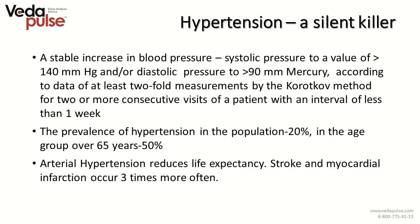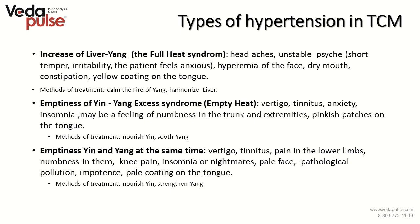Hypertension is a silent killer because it takes first place among causes of sudden death. People with hypertension get used to its symptoms and do not take preventive measures until it is too late. Arterial hypertension reduces life expectancy. Stroke and myocardial infarction occur three times more often in those with hypertension.